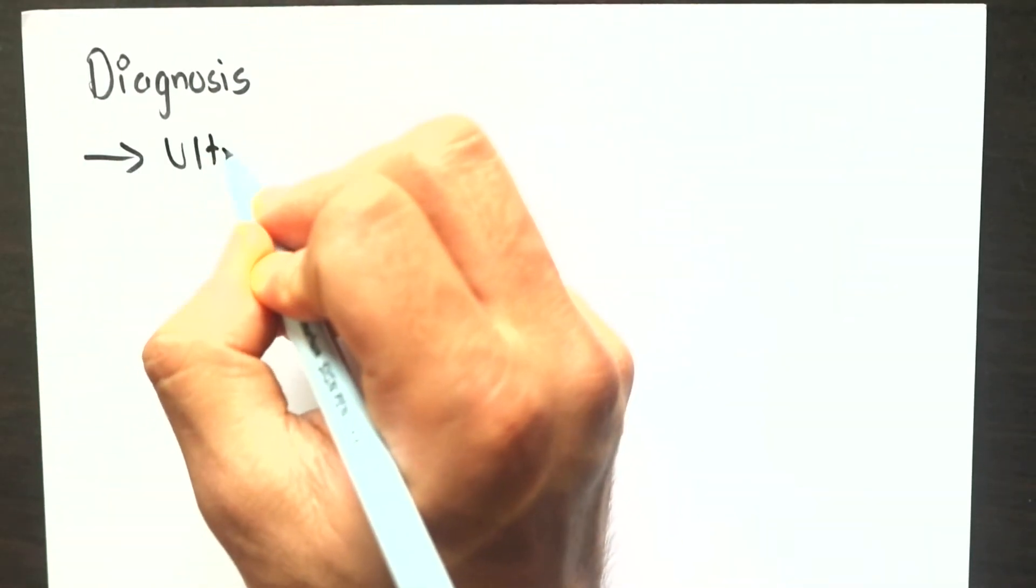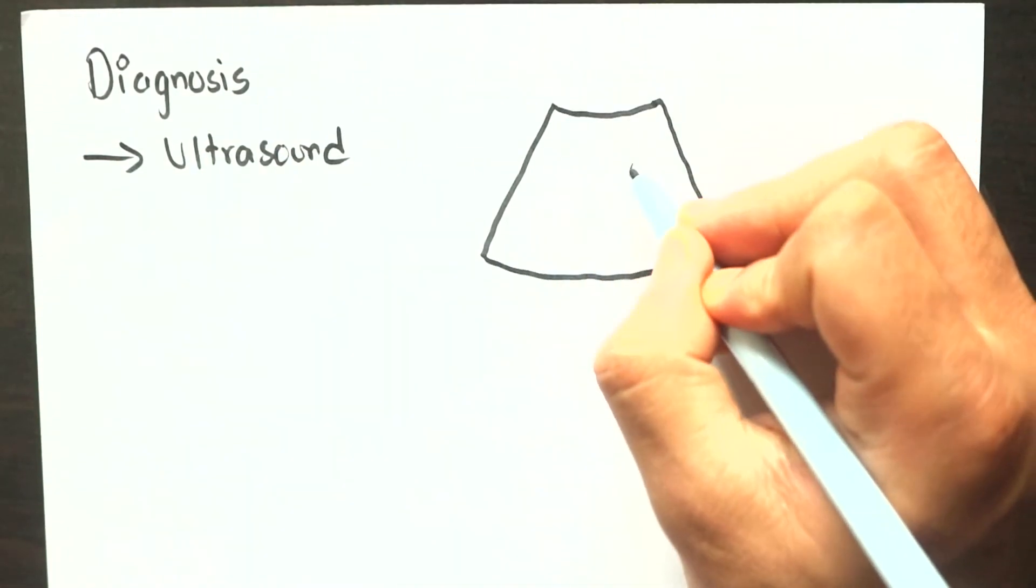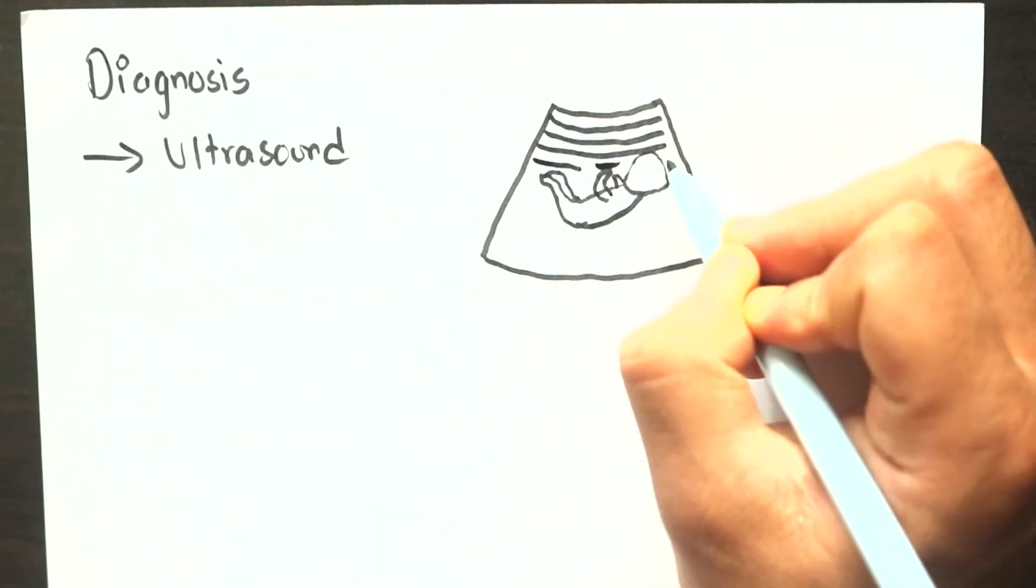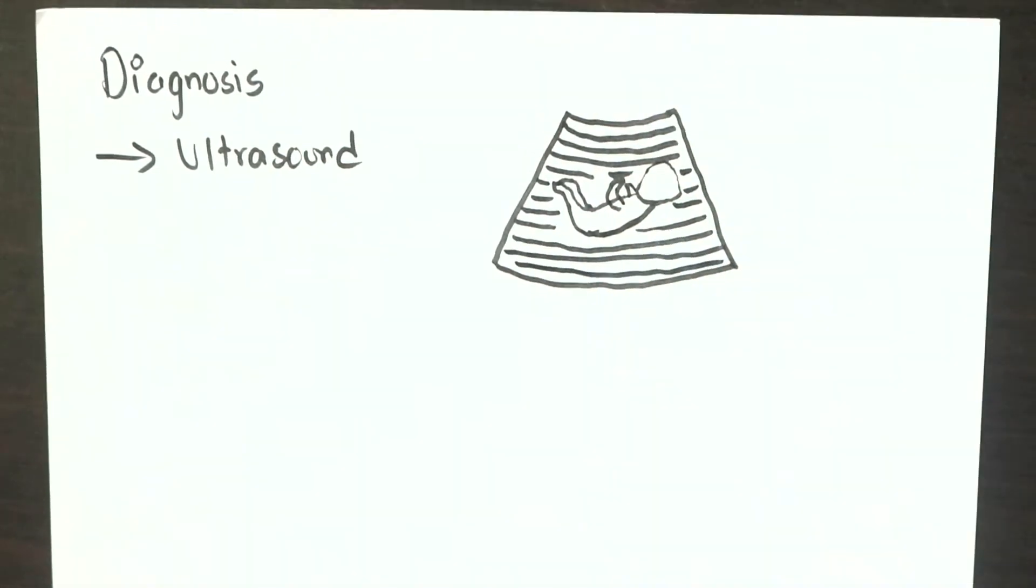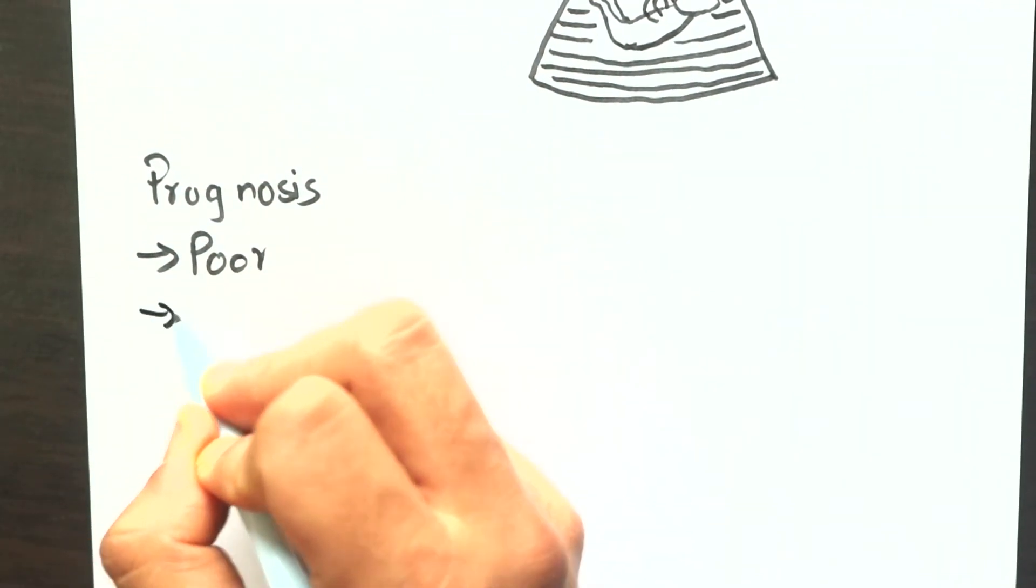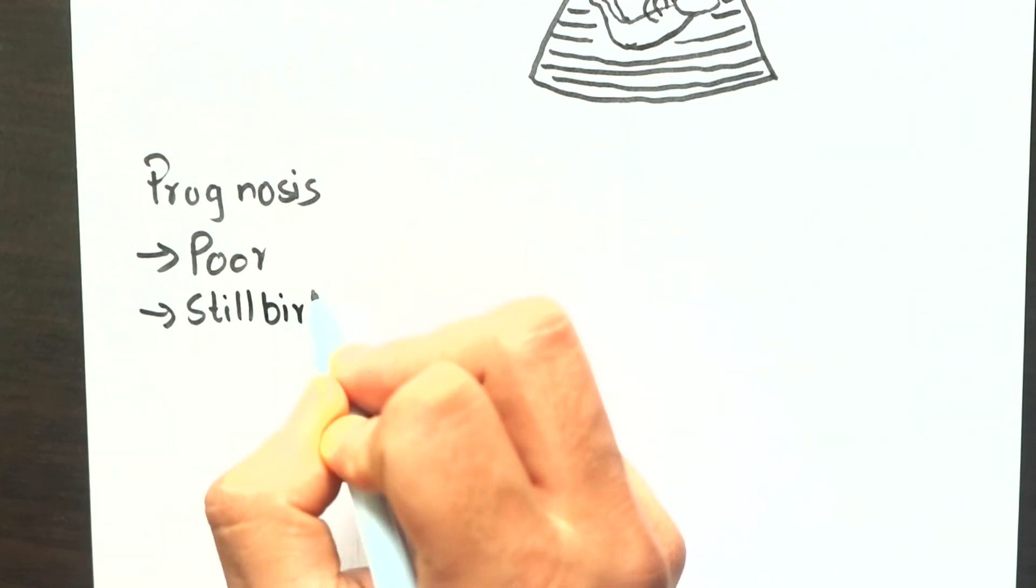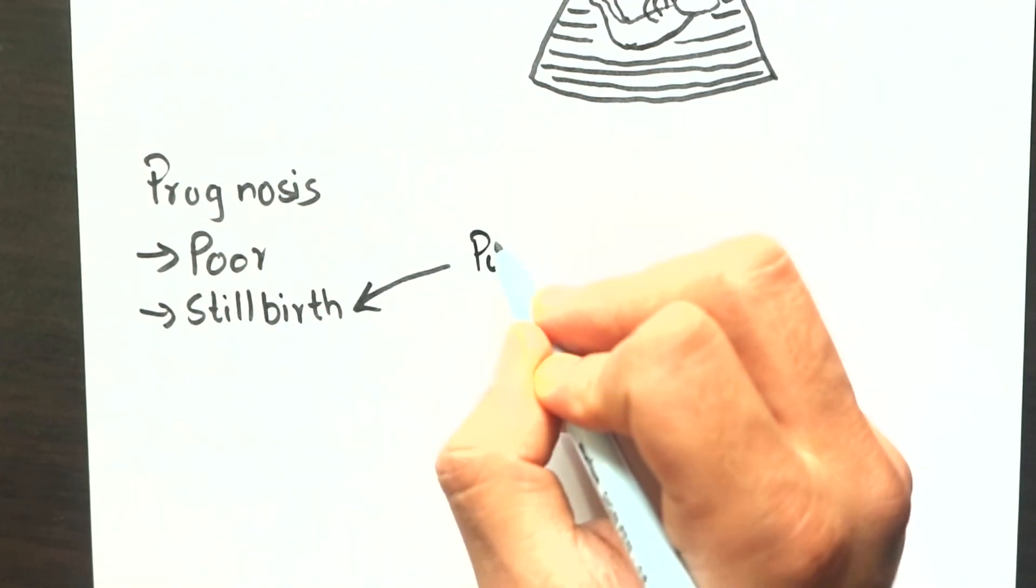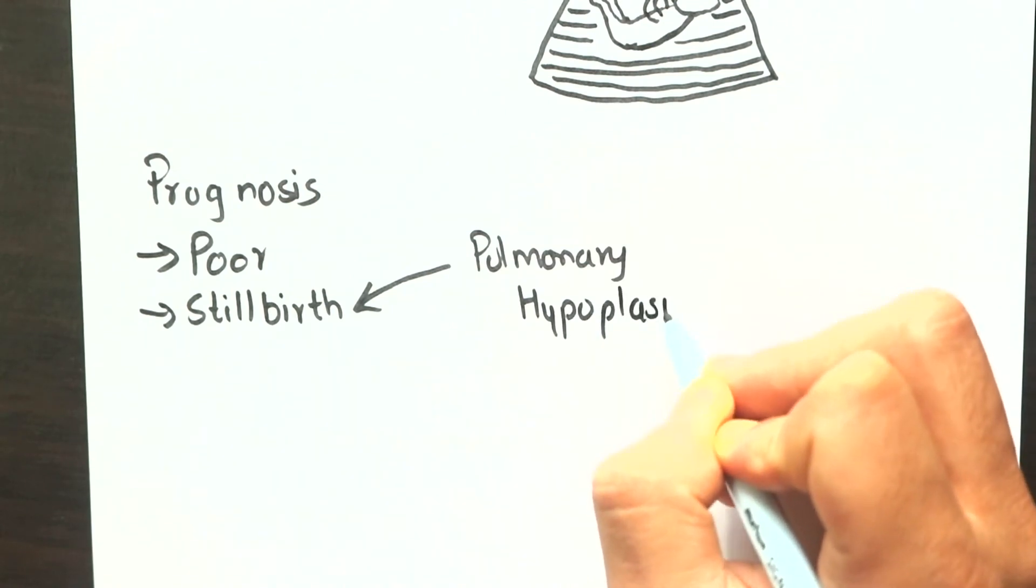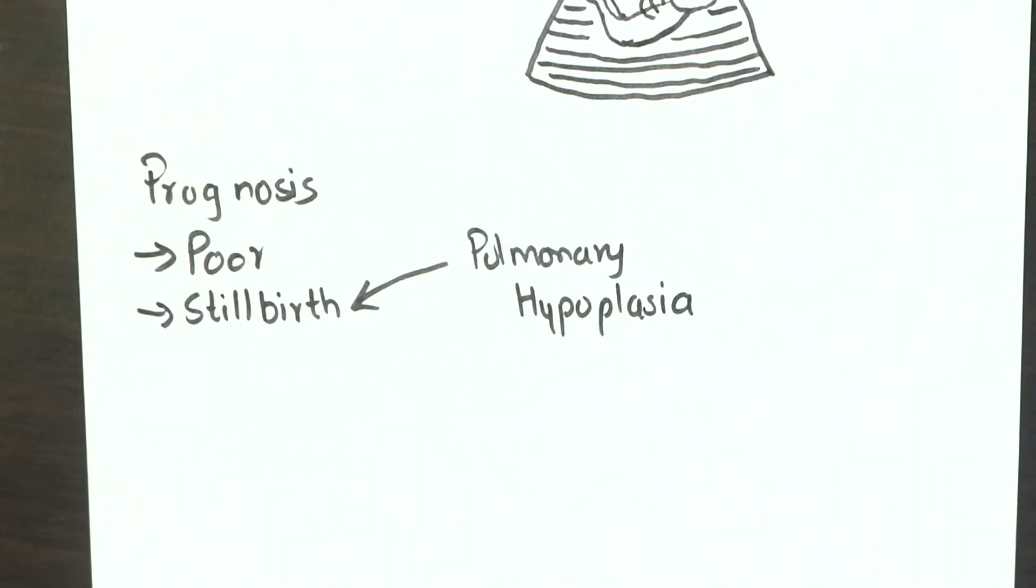Diagnosis is usually done with ultrasound at second trimester of pregnancy, but often at the time of diagnosis the condition has already worsened. Hence the prognosis is poor. Most babies die before birth, and even if they survive after delivery there can be lung failure due to pulmonary hypoplasia which can lead to death.